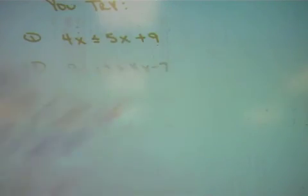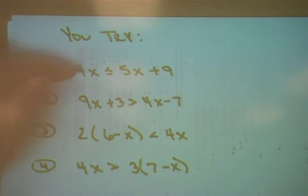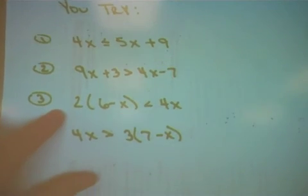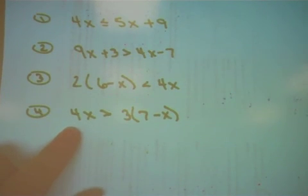So knowing that, here are 4 problems I would like you to try. Number 1, 4x is less than or equal to 5x plus 9. Number 2, 9x plus 3 is greater than 4x minus 7. Number 3, 2 times the quantity 6 minus x is less than 4x. And number 4, 4x is greater than 3 times the quantity 7 minus x. Please show all your work to solve for x, reduce your fractions if needed, and when possible, graph your solutions on a number line.